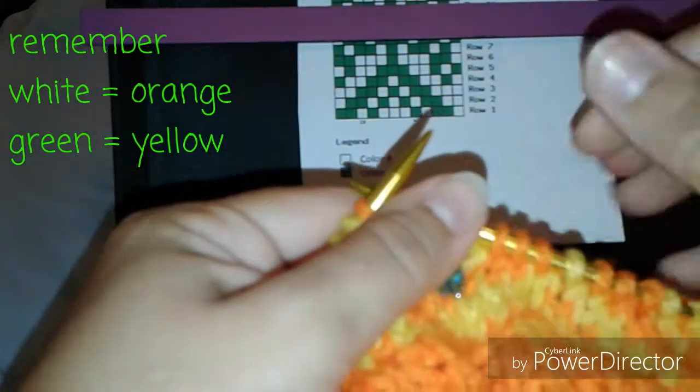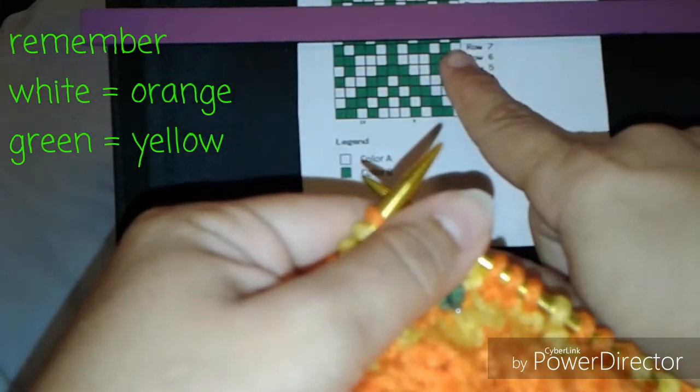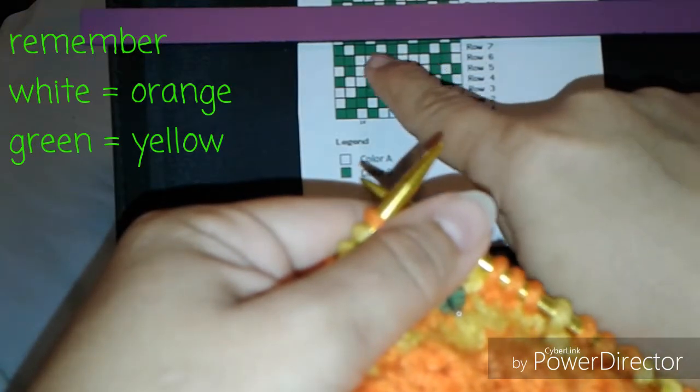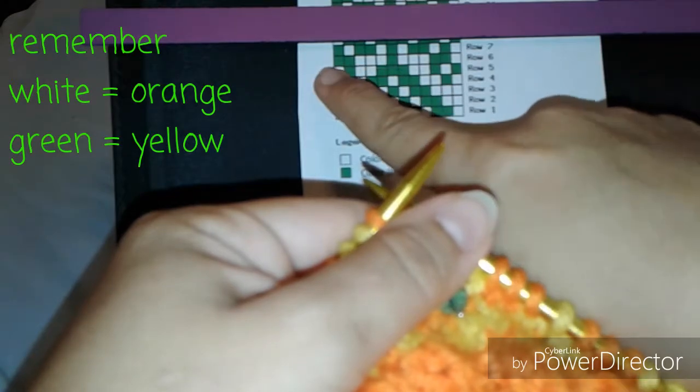Here we're going to work row seven. One yellow, one orange, one yellow, one orange, two yellow, one orange, one yellow, one orange, two yellow, one orange, one yellow.